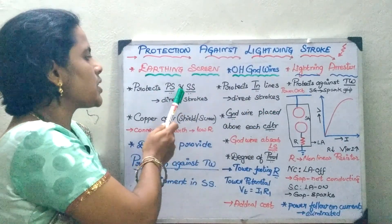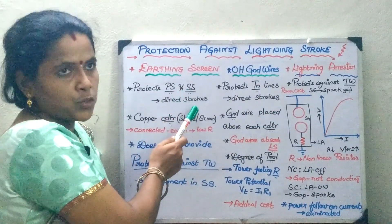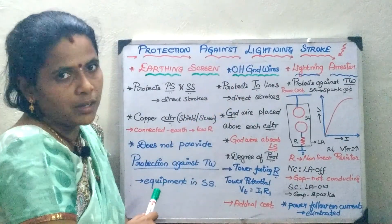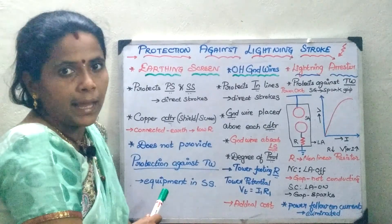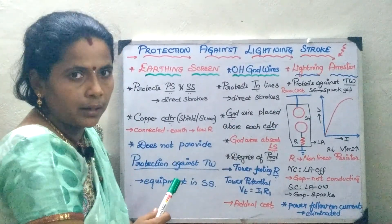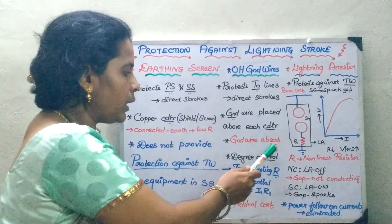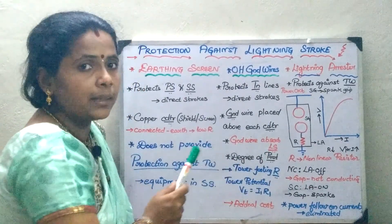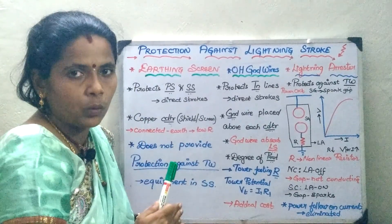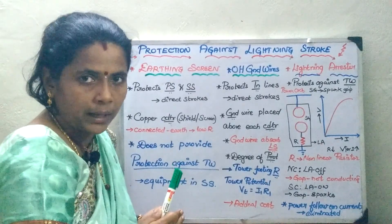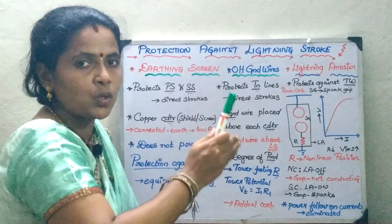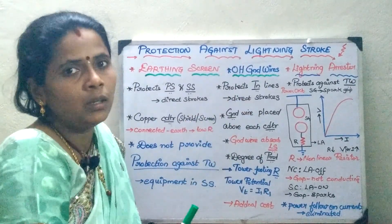The earthing screen protects the power station and the substation against direct strokes, whereas the overhead ground lines give protection for your transmission lines. You are going to place a ground wire above each conductor. This ground wire is going to absorb the lightning surges. One concept to note is what degree the overhead ground wires are going to protect — it is going to depend upon the tower footing resistance.